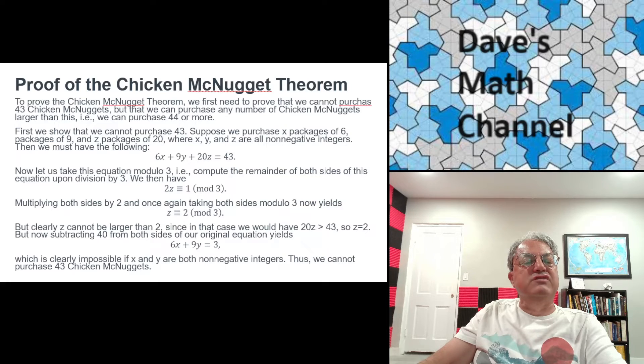And on the left side, notice that 6 and 9 are already both divisible by 3. So you're going to get 2Z. The only one that's not is 20. 20 mod 3 is 2.